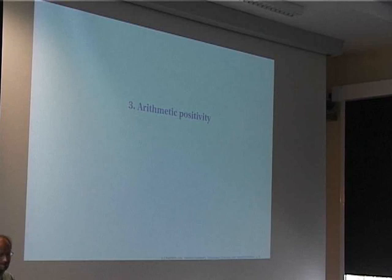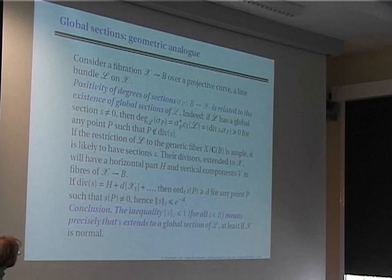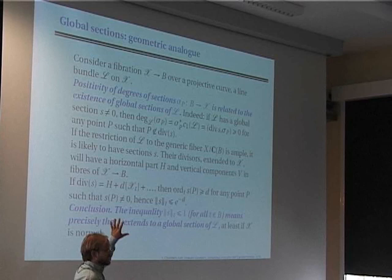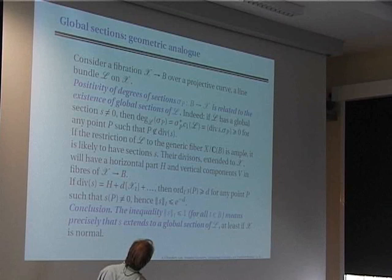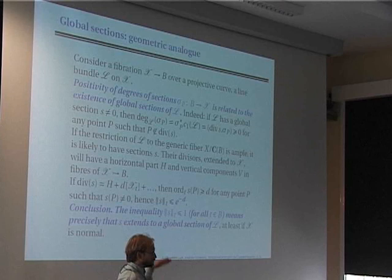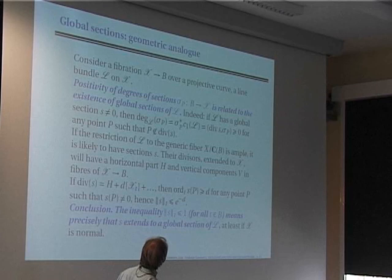This is called arithmetic positivity. Before discussing the arithmetic analog, I have to go back to the geometric one. In the geometric case we have fibrations over a curve and a line bundle on the total space of the fibration. The analog of the relation between heights is the fact that if a section of this fibration has positive degree against L, this is related to the existence of global sections for the line bundle L.